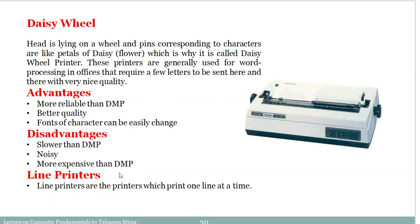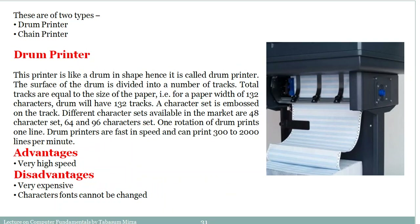Moving to another category: line printers. Unlike character printers that print a single character at a time, line printers print one full line at a time. There are two types: drum printers and chain printers. The drum printer is drum-shaped. The surface of the drum is divided into a number of tracks equal to the size of the paper — typically 132 characters. One character set is embossed on each track. Available character sets are 48, 64, or 96. One rotation of the drum prints one line.